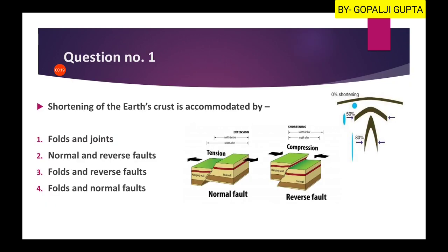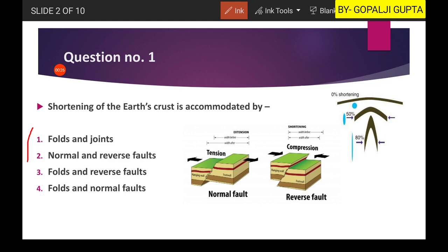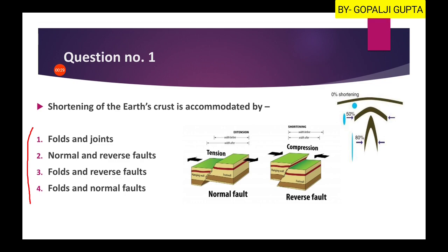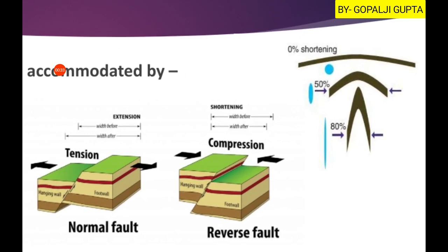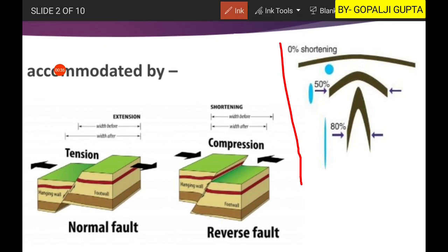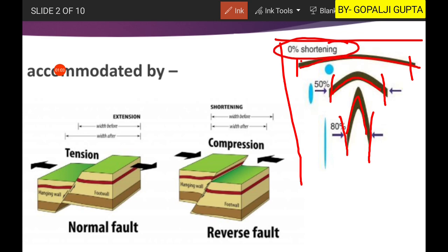Question one: shortening of the Earth's crust is accommodated by either folds and joints, or normal and reverse faults, or fold and reverse fault, or fold and normal fault. As you can see in these pictures, this is showing the representation of a fold. In the general case we have a certain length of a rock layer, then because of folding the length decreases, and as folding proceeds the length will be further decreased. So folds lead to the shortening of the crust.